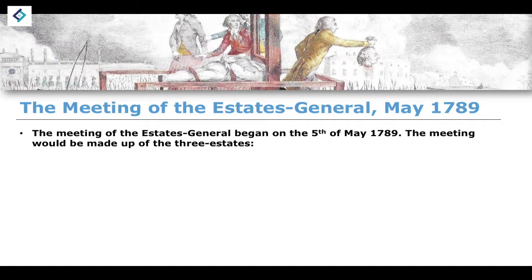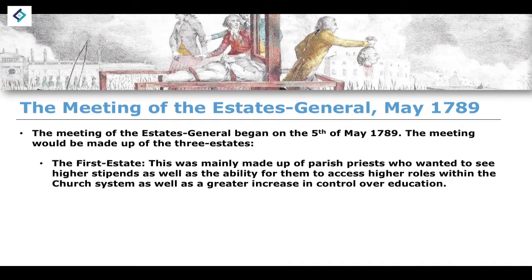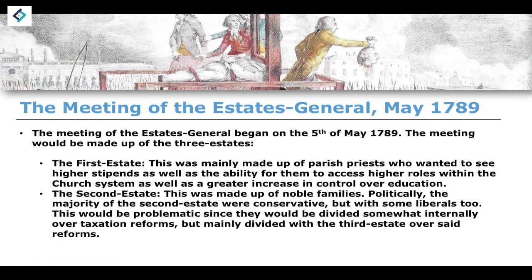The meeting would begin on the 5th of May 1789, made up of the three estates. The First Estate was mainly made up of parish priests and the clergy — representatives of the church who wanted higher stipends, greater access to higher roles within the church system, and greater control over education. One of the problems was that all three estates, while representing different areas of French society, also had different goals for what they wanted to gain from the Estates General.